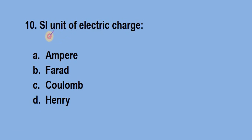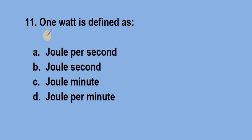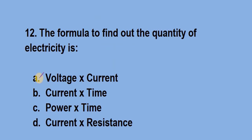Question number 10, SI unit of electric charge. Answer is option C, coulomb. Question number 11, 1 watt is defined as? Answer is option A, Joule per second. Question number 12, the formula to find out the quantity of electricity is? Answer is option B, current into time. That is Q is equal to IT.